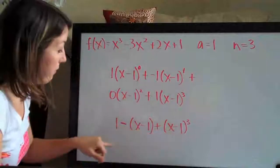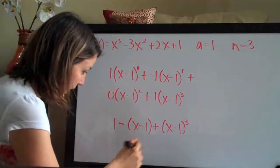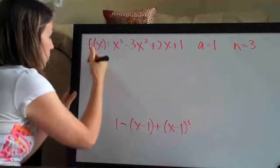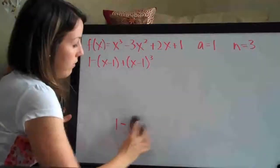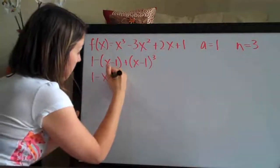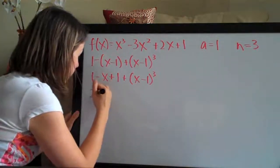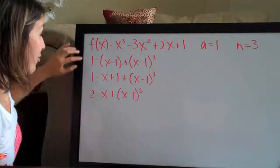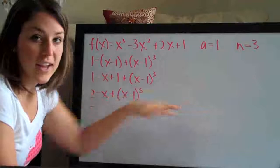So you can either leave your answer like this and that would be perfectly correct and acceptable. If you wanted to, you could simplify this slightly. Let's go ahead and rewrite this up here so we have a little more room: 1 minus x minus 1 plus x minus 1 cubed. That could be your final answer. If you'd like, you can simplify further: 1 minus x and then a minus negative gives a plus 1, plus x minus 1 cubed. So 1 plus 1 is 2, giving 2 minus x plus x minus 1 to the third. You could simplify your answer that way, but you really don't have to, because this is the most correct form of the Taylor polynomial — each term is represented based on our table.